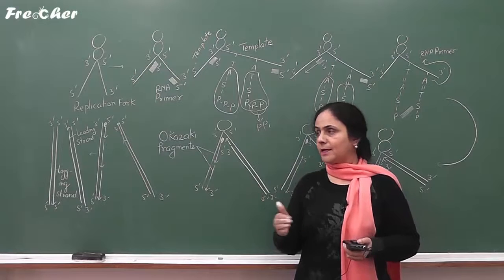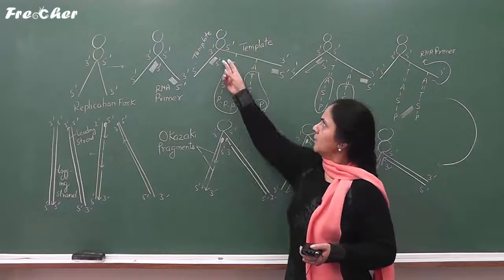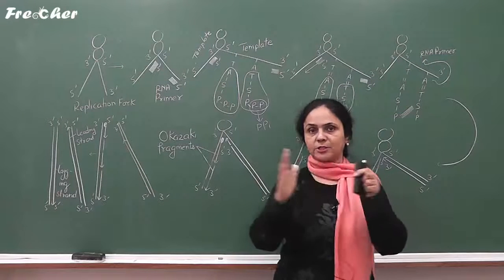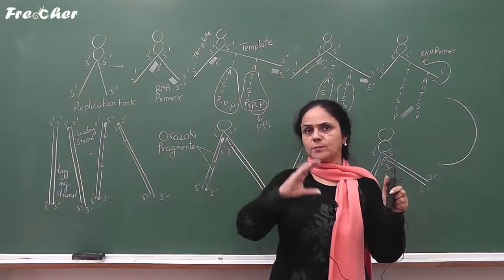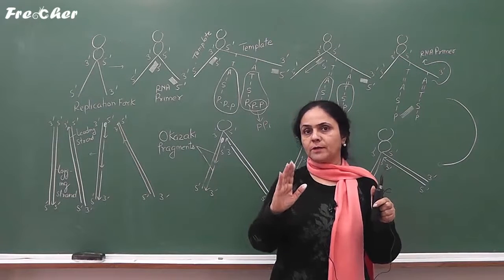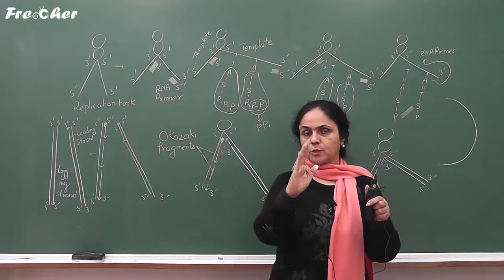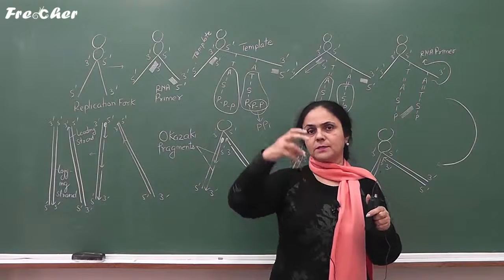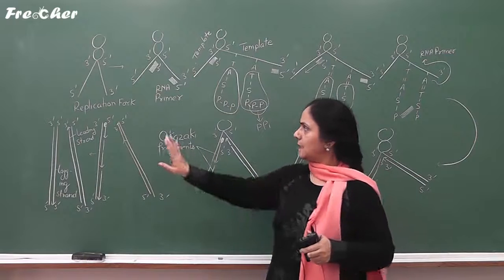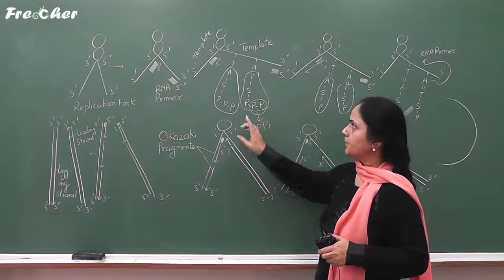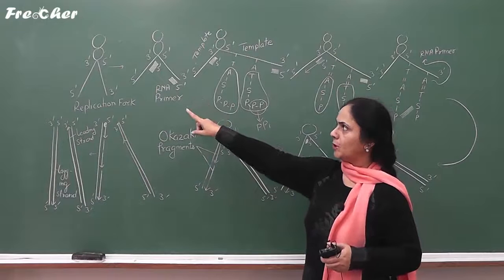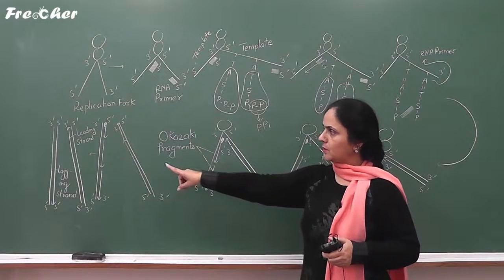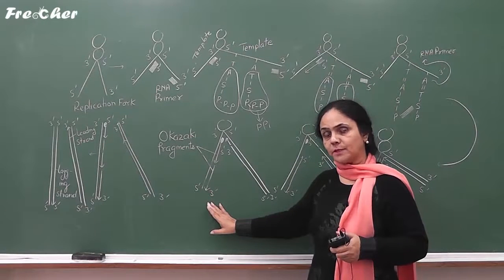During DNA replication, the uncoiling of two strands does not occur in a single stretch, but occurs in very small steps because uncoiling requires a large amount of energy. Overall, when one DNA molecule replicates, two daughter DNA molecules are produced, and both new strands are synthesized in the 5'→3' direction.